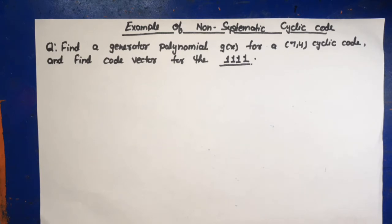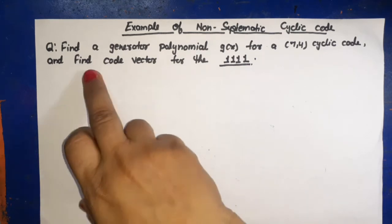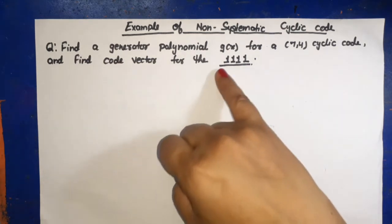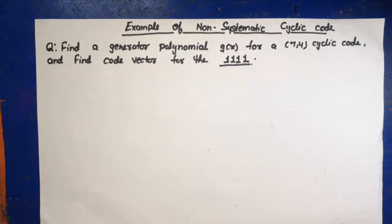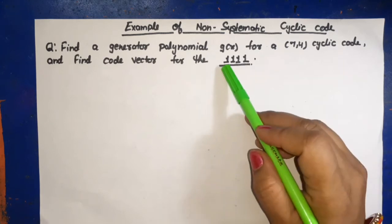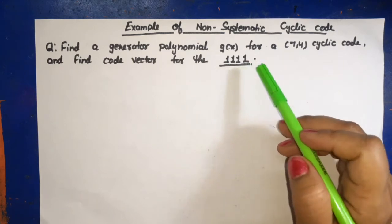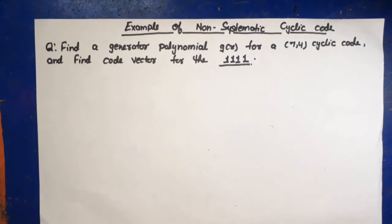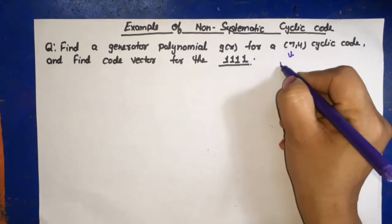In question, find a generator polynomial g(x) for a (7,4) cyclic code and find code vector for the message 1111. Clear. Now start according to the question, small n means codeword length is 7, small k is 4.